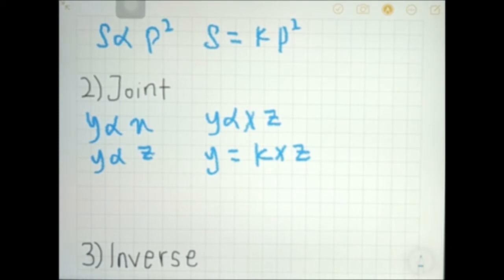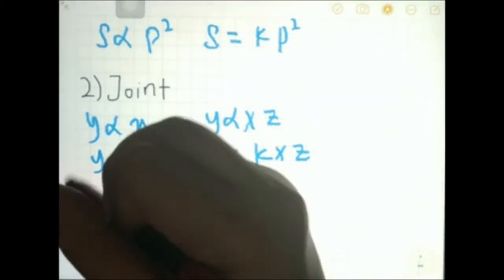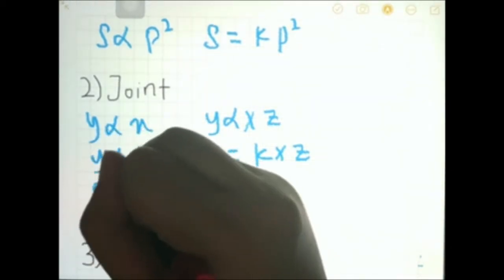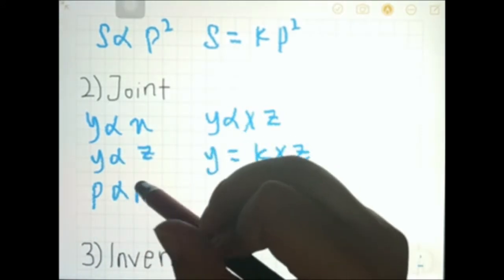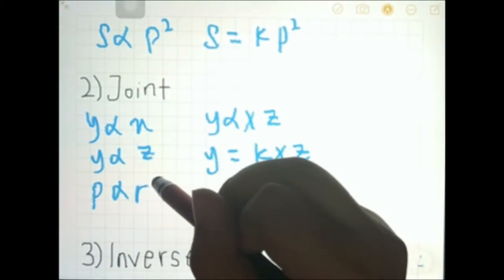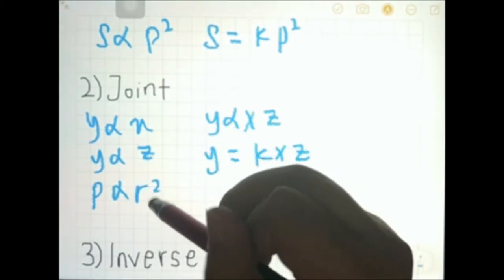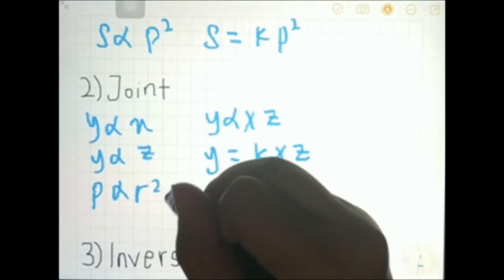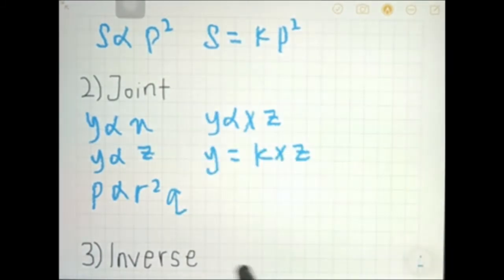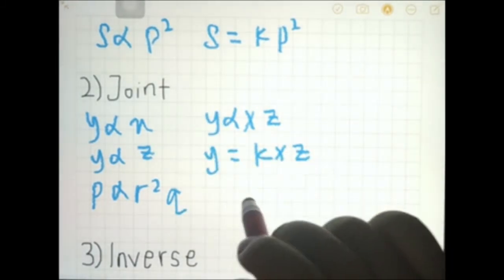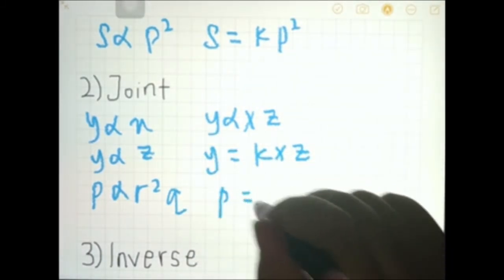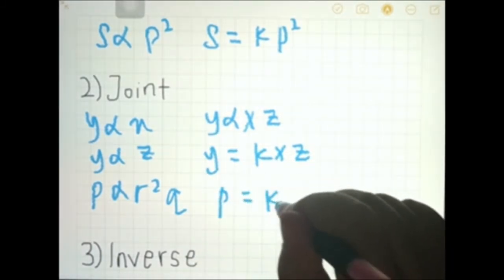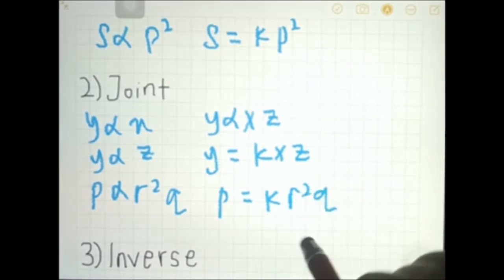Not just y — what if we say p varies jointly with r, r squared, and q? We can write the equation as p equals k times r squared times q.